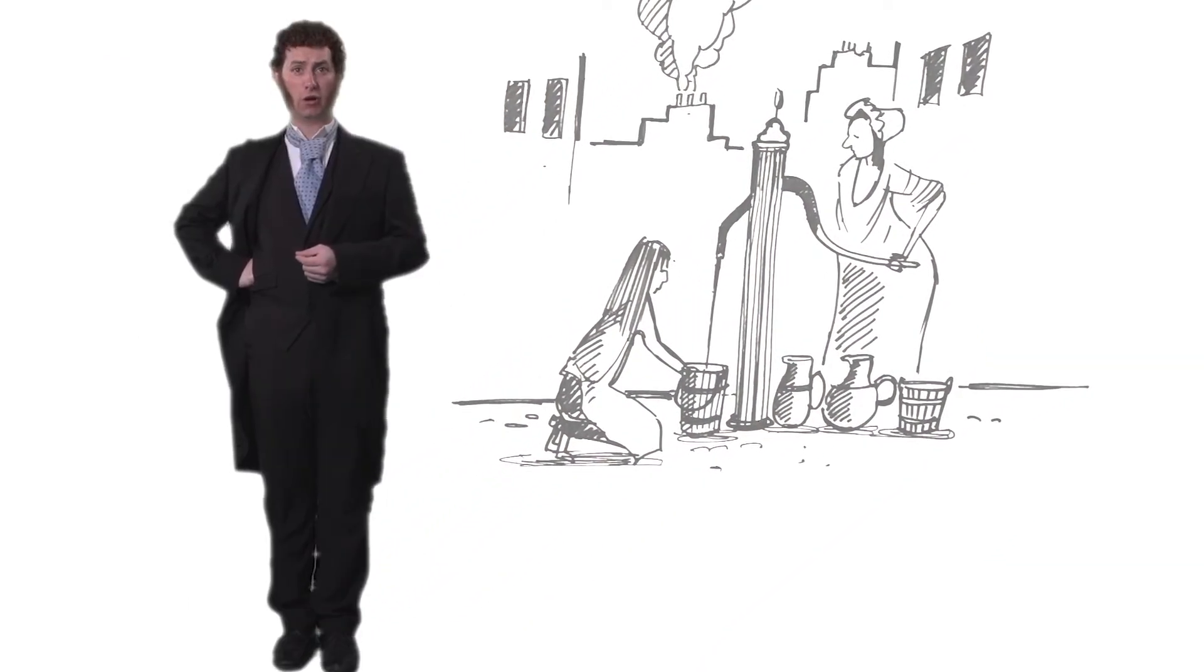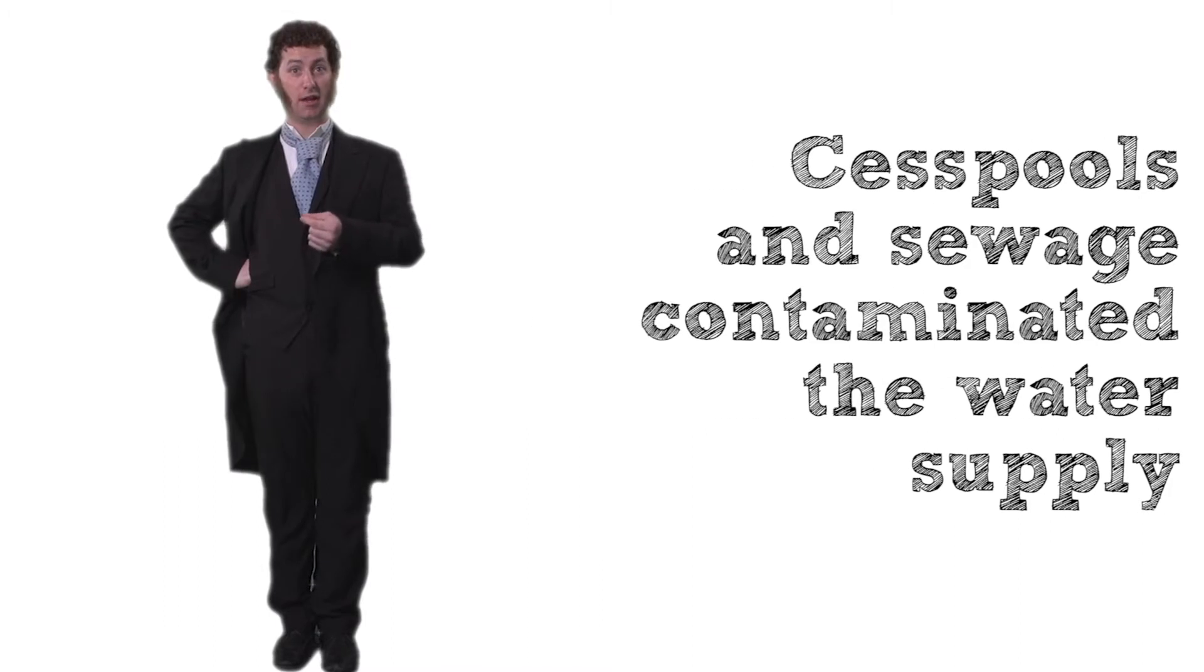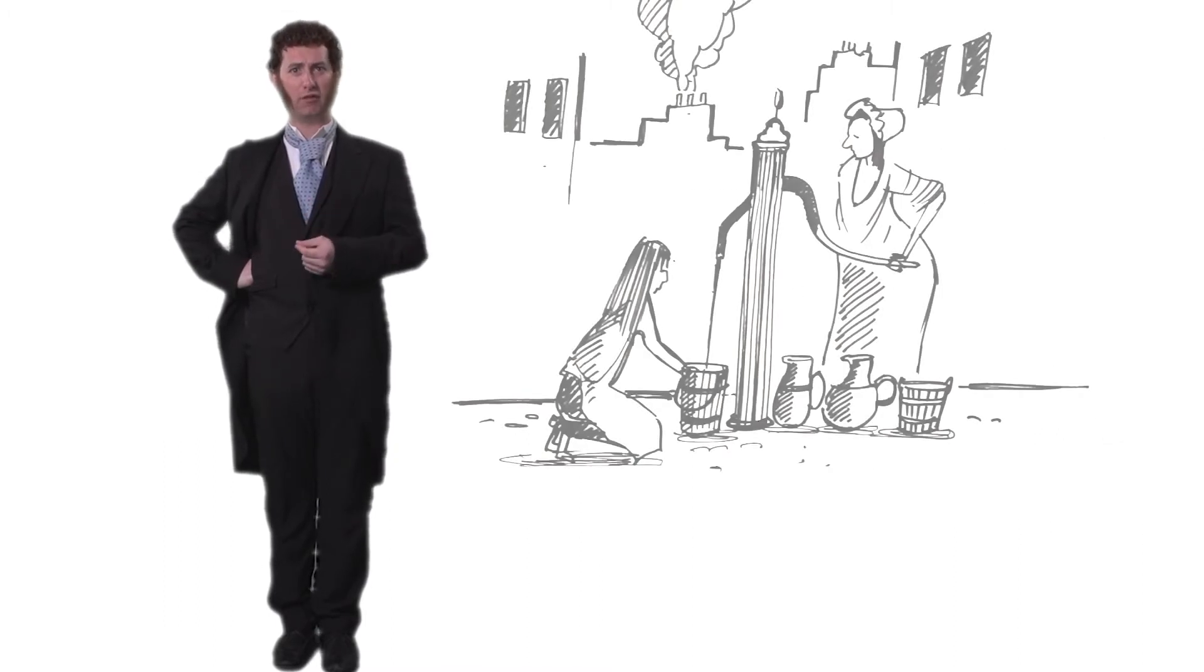My theory of how cholera was being spread in London is straightforward. It's my opinion that cesspools near town wells and sewage dumped into rivers contaminate the water supply. This then leads to a rapid spread of the disease.